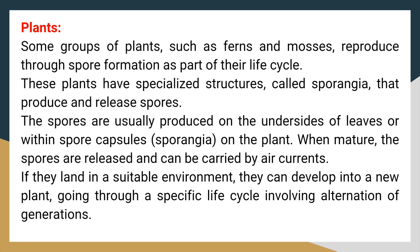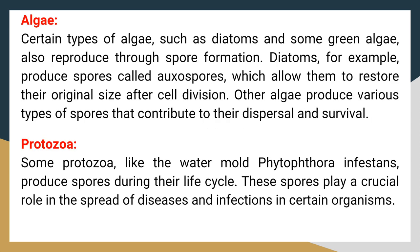Some groups of plants, such as ferns and mosses, reproduce through spore formation as part of their life cycle. These plants have specialized structures called sporangia that produce and release spores, usually on the undersides of leaves or within spore capsules. When mature, the spores are released and can be carried by air currents; if they land in a suitable environment, they develop into a new plant through alternation of generations. Certain types of algae, such as diatoms and some green algae, also reproduce through spore formation. Diatoms produce spores called auxospores, which allow them to restore their original size after cell division.